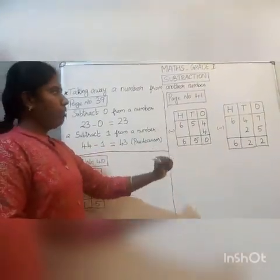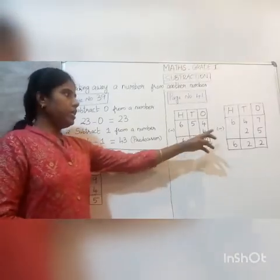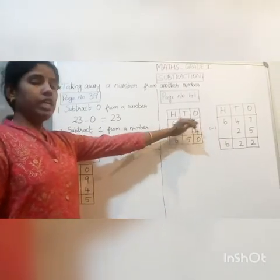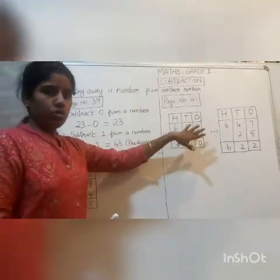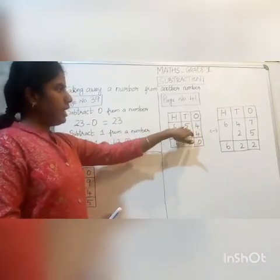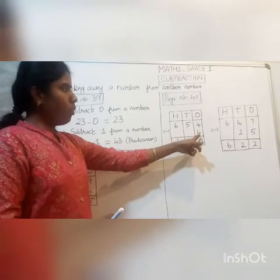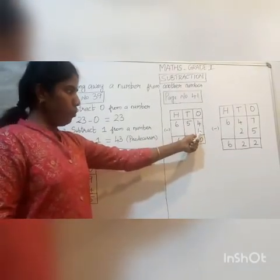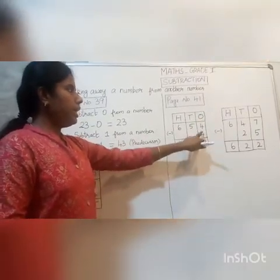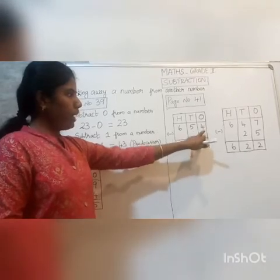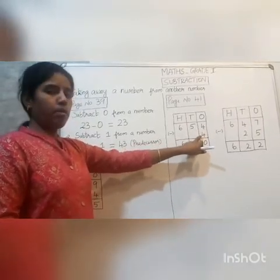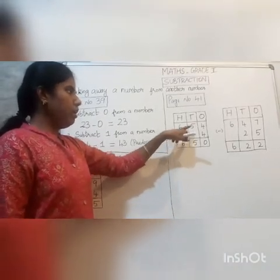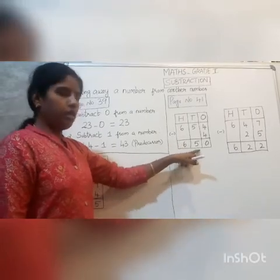Moving on to page number 41, we have one-digit and two-digit numbers being subtracted from three-digit numbers. This is also without borrowing. We have ones, tens, and hundreds. Since we have only one number which is 4, we write it in the ones place and subtract — 4 minus 4 is 0. If we take away the same number we get 0 as the answer. Since we don't have any numbers in the other places, we just write the same numbers for the answer.